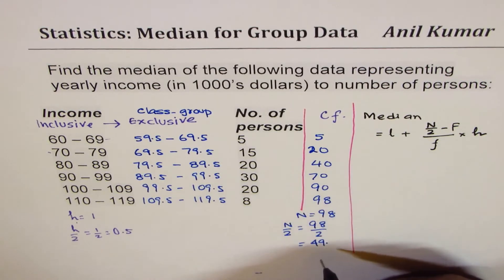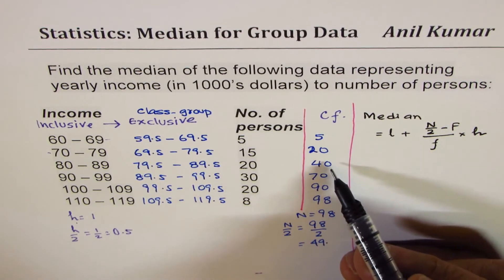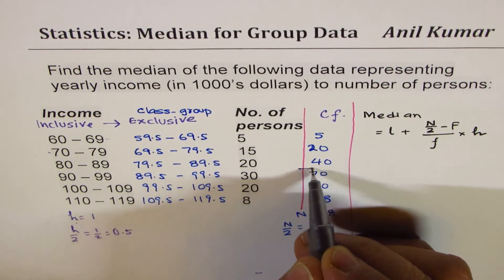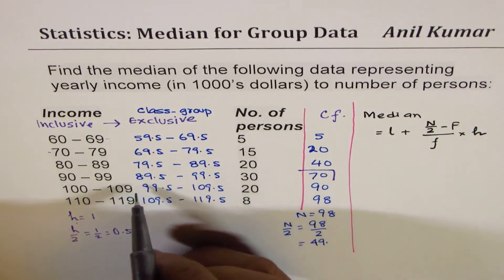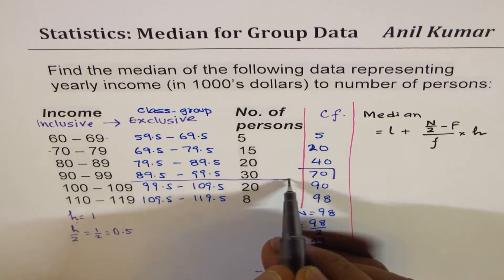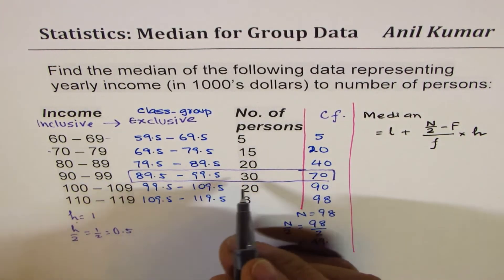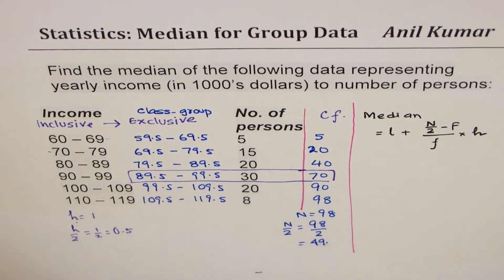Check your cumulative frequency. Where will 49 lie? Just above 40, that is this. So we are into this group. That becomes the modal group.